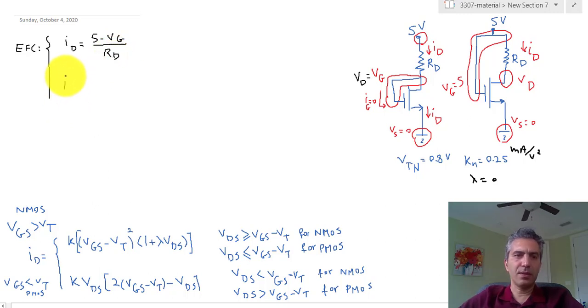For the resistor, ID is equal to 5 volts minus the gate voltage divided by the resistance RD. And then for the transistor, I have to decide which one to use. In this specific case, this is actually not going to be a guess. VGS, the definition is VG minus VS. In our case, VS is actually zero, so this is really VG. VDS is equal to VD minus VS - again, VS is zero in our case, so this is VD.